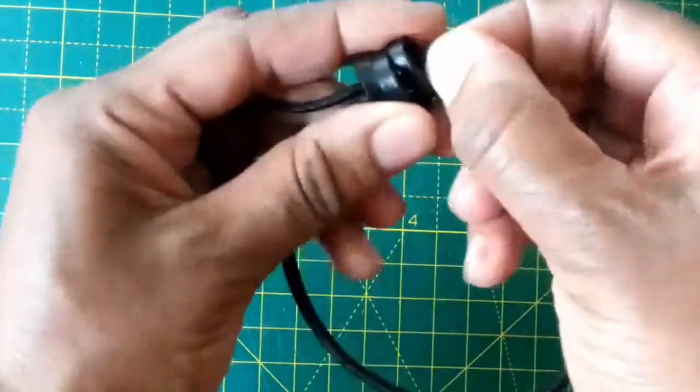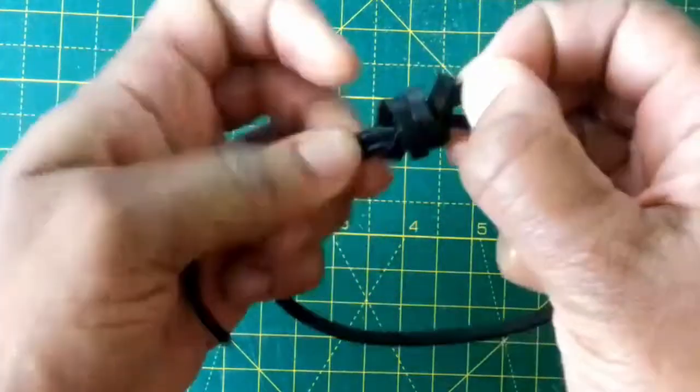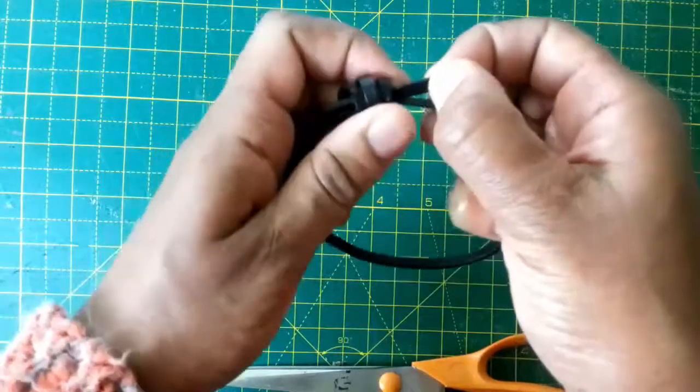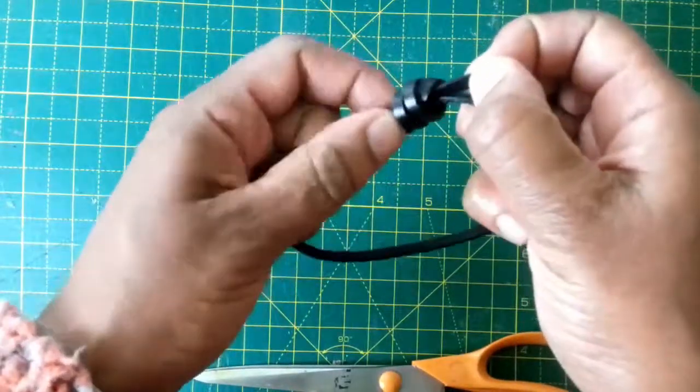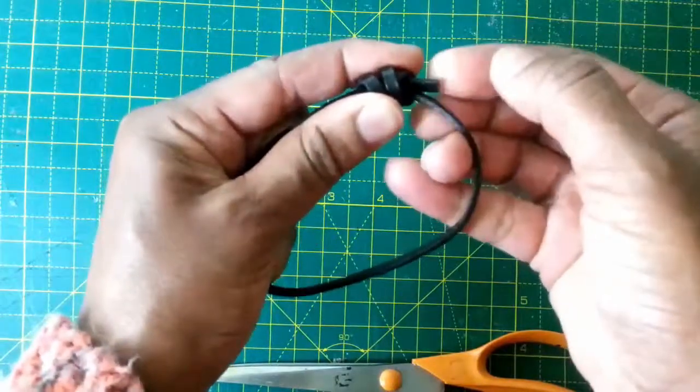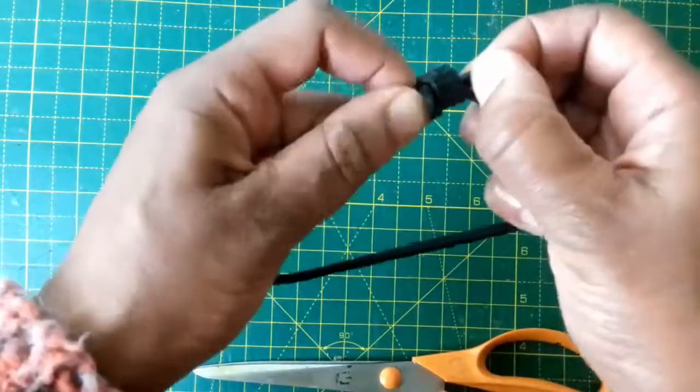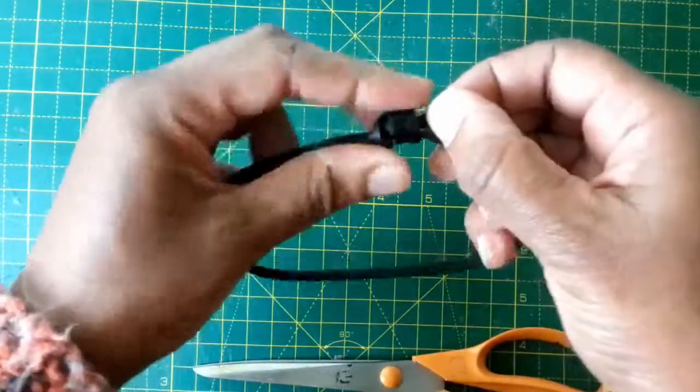And then we're just going to pull that end, holding on as we do that. Things might appear a little bit messy, but what we do is just push those loops along, holding on to this little end. Keep pulling and pushing so that the knot tightens up.